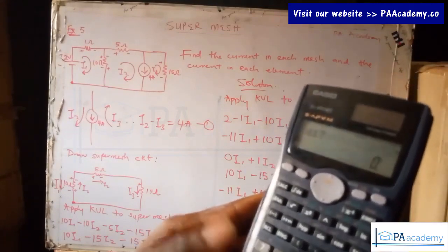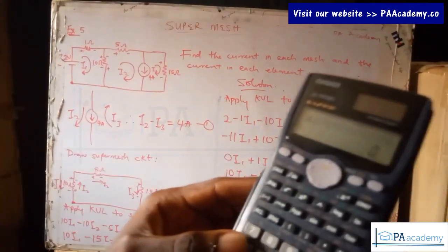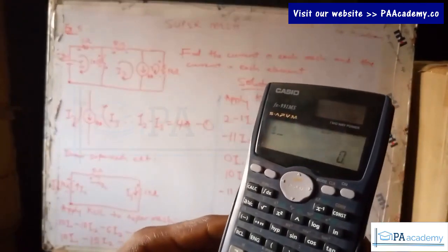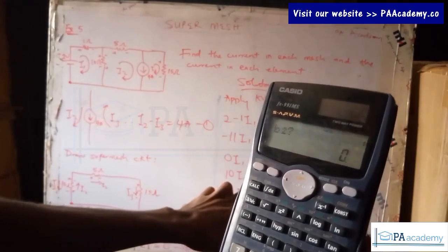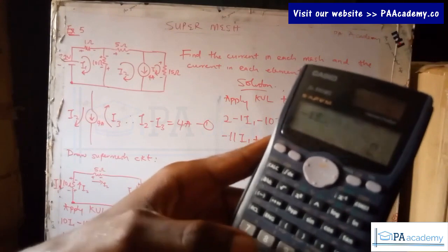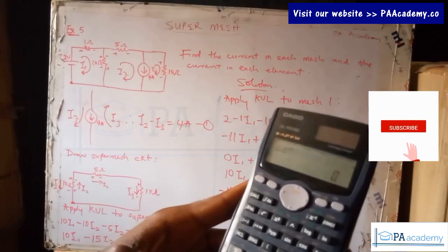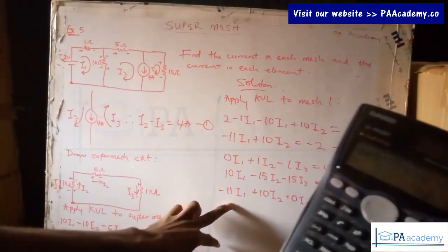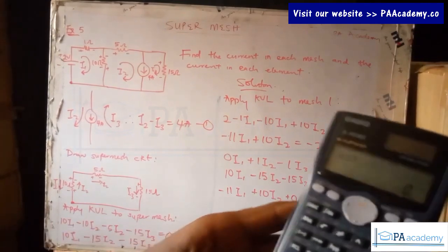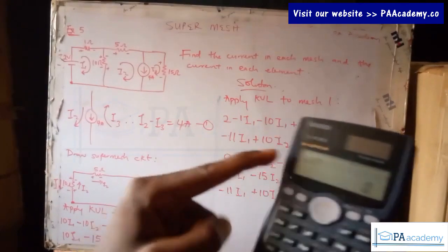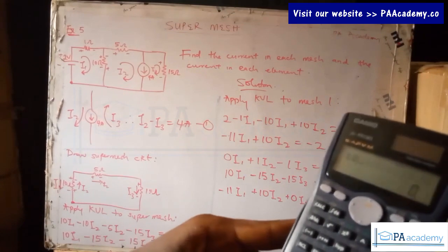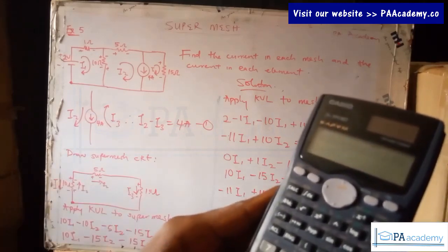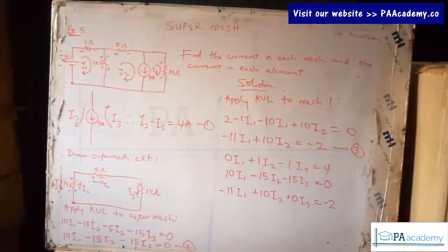Continuing with the calculator: for Equation 1 enter d1 = 4. For Equation 2 enter a2 = 10, b2 = −15, c2 = −15, d2 = 0. For Equation 3 enter a3 = −11, b3 = 10, c3 = 0, d3 = −2. Press equals after each entry and the calculator will solve the system.